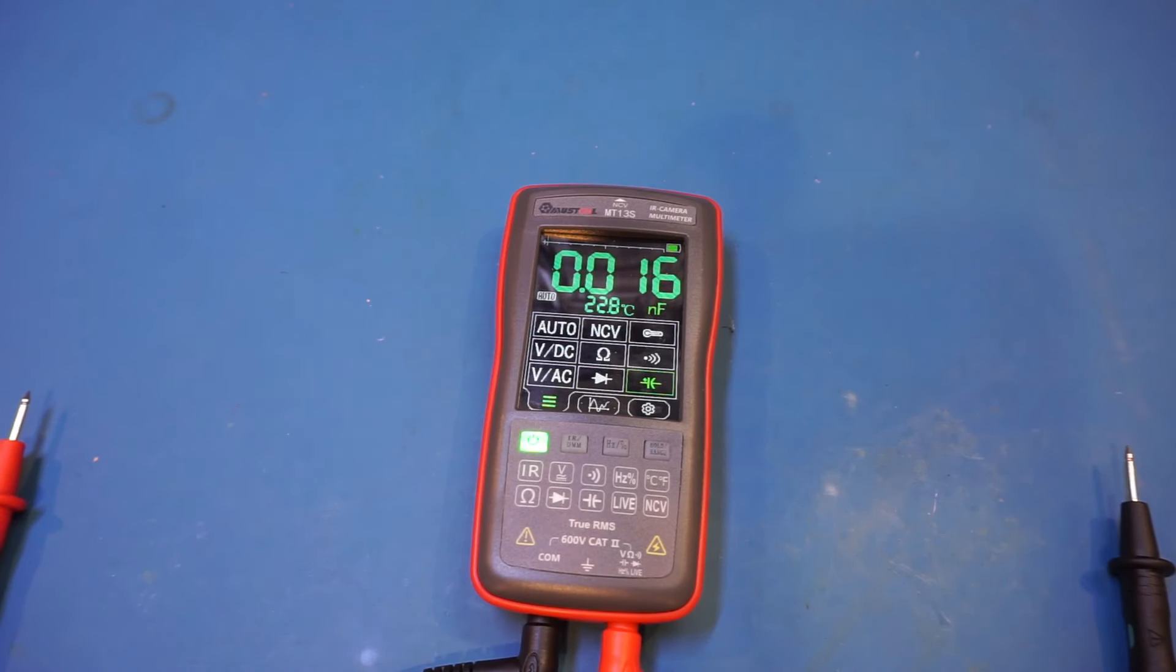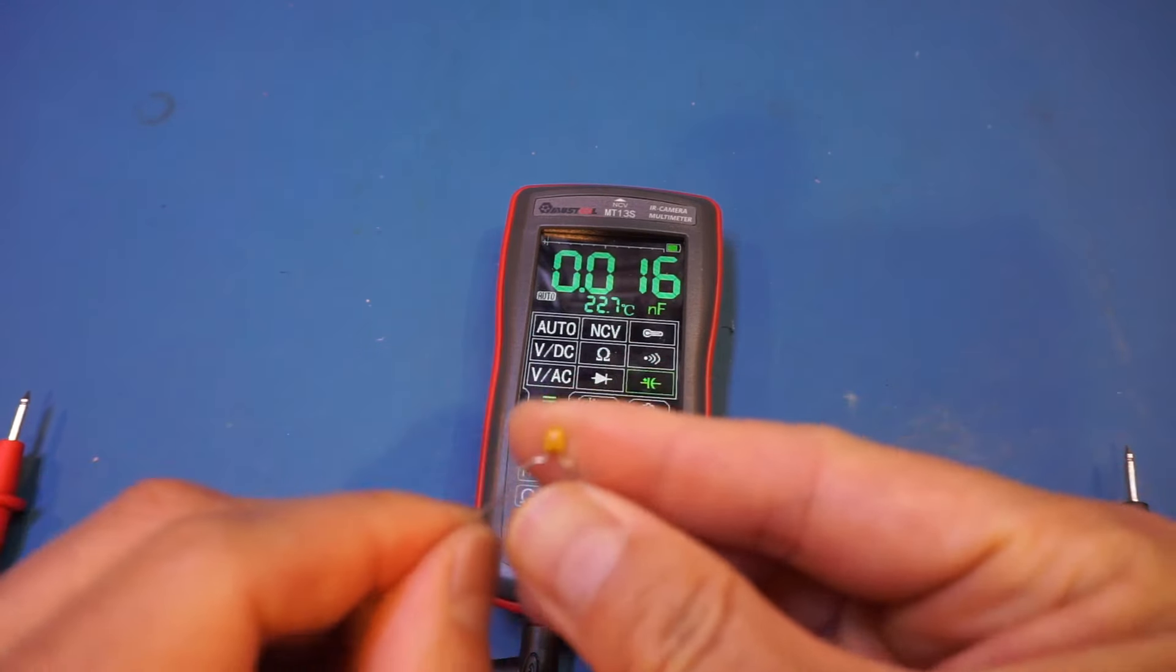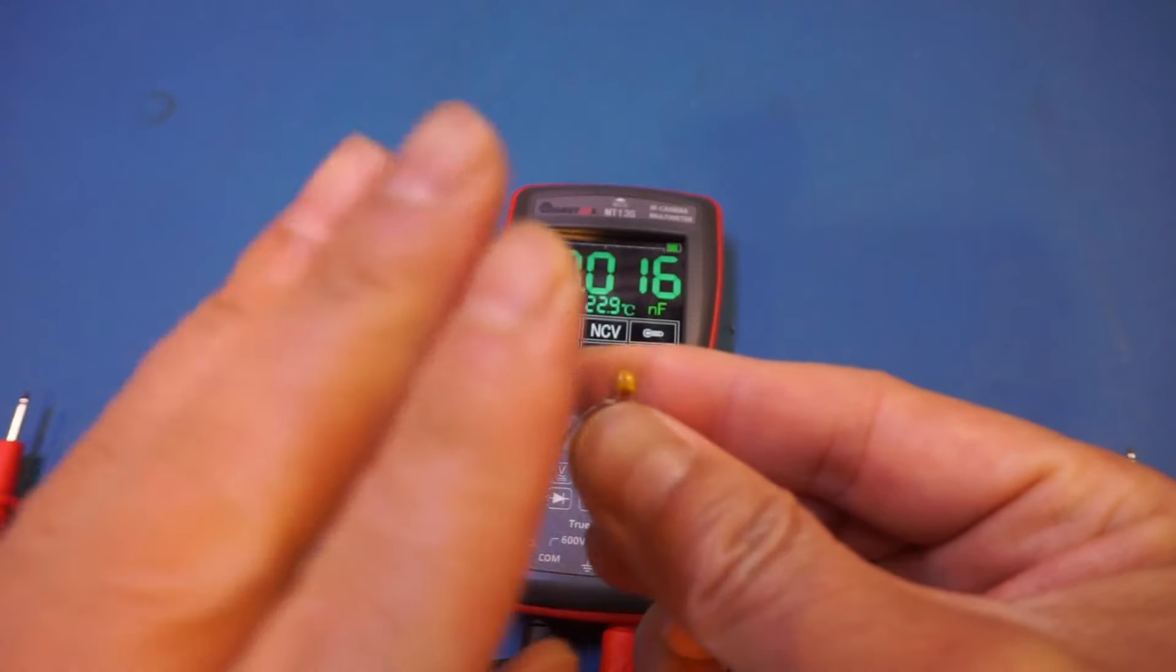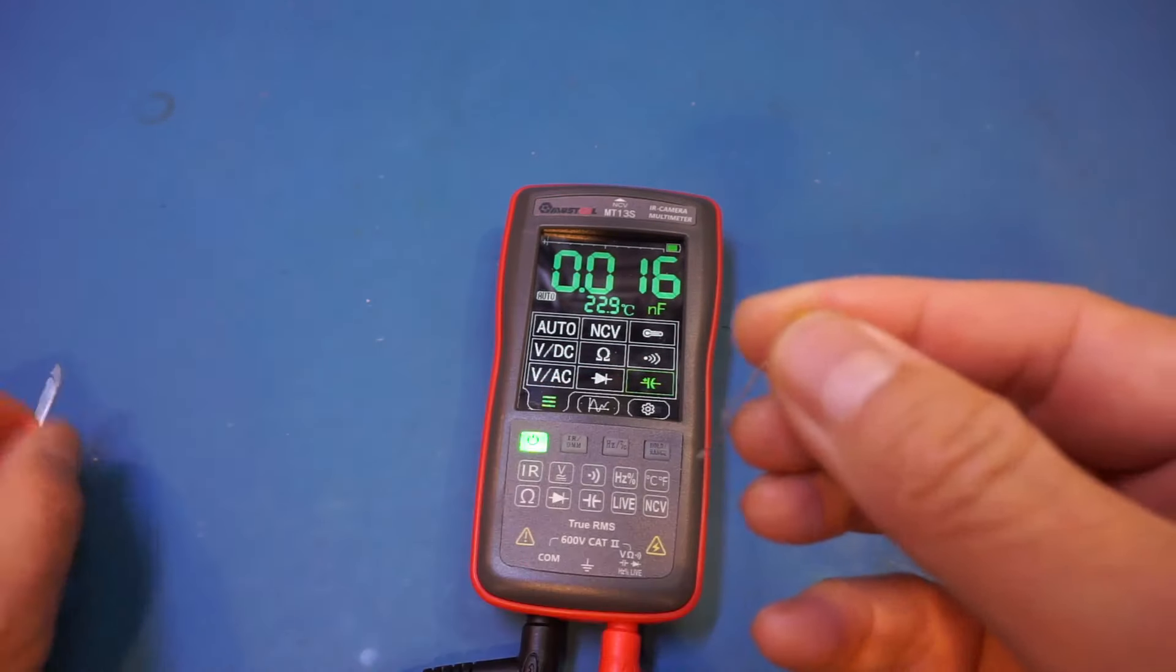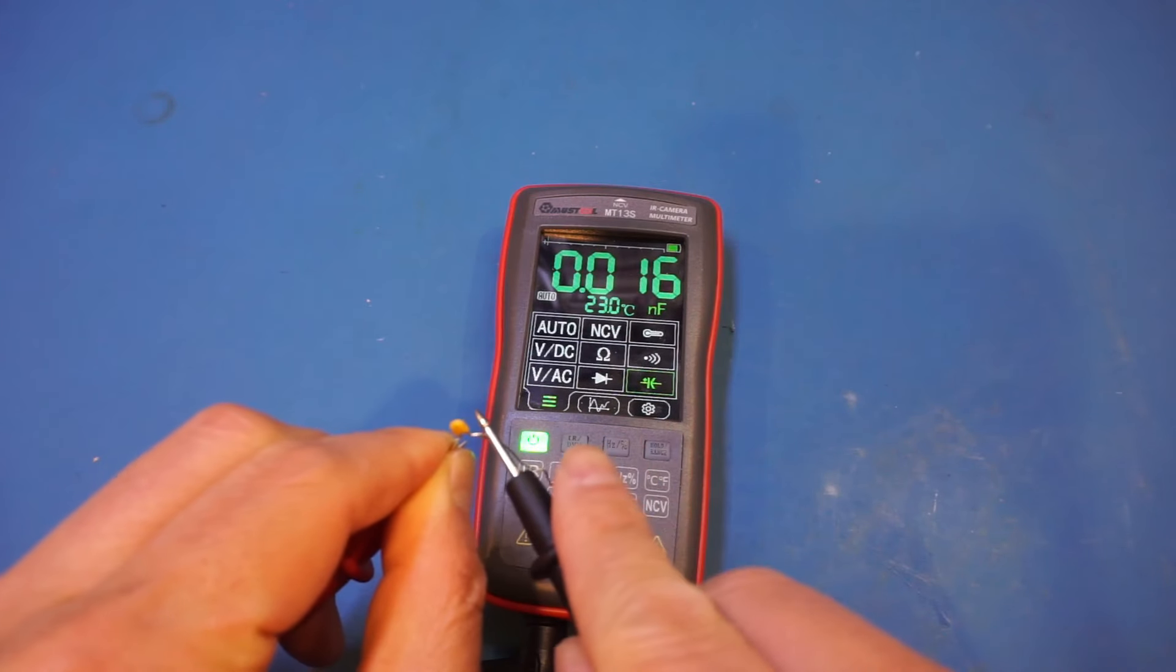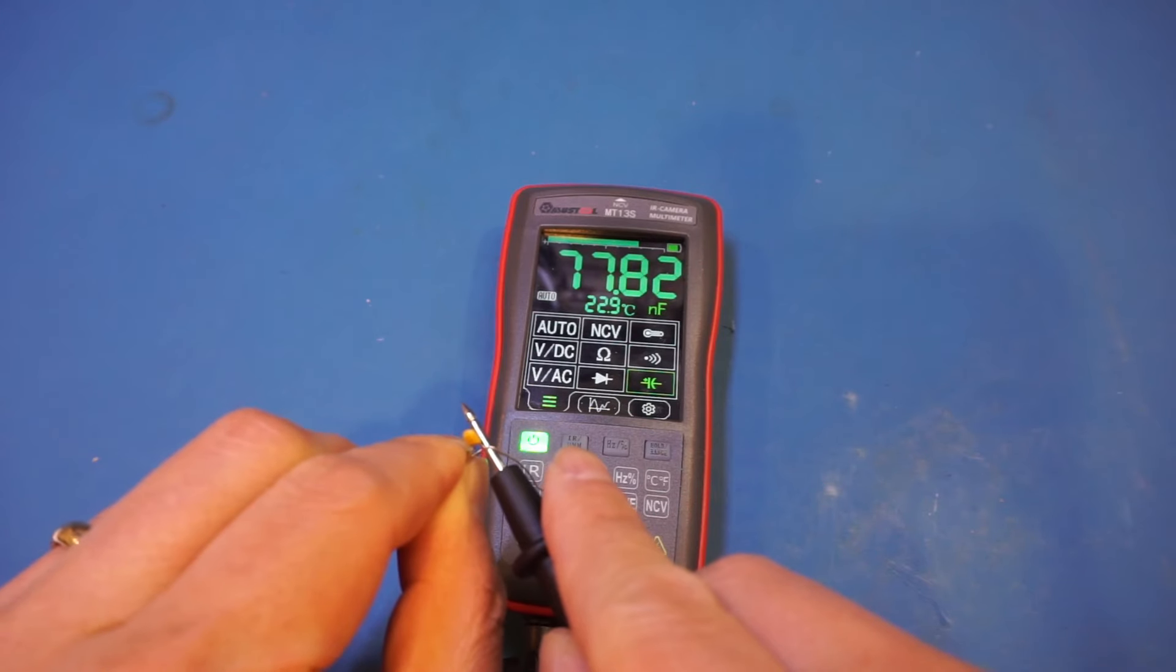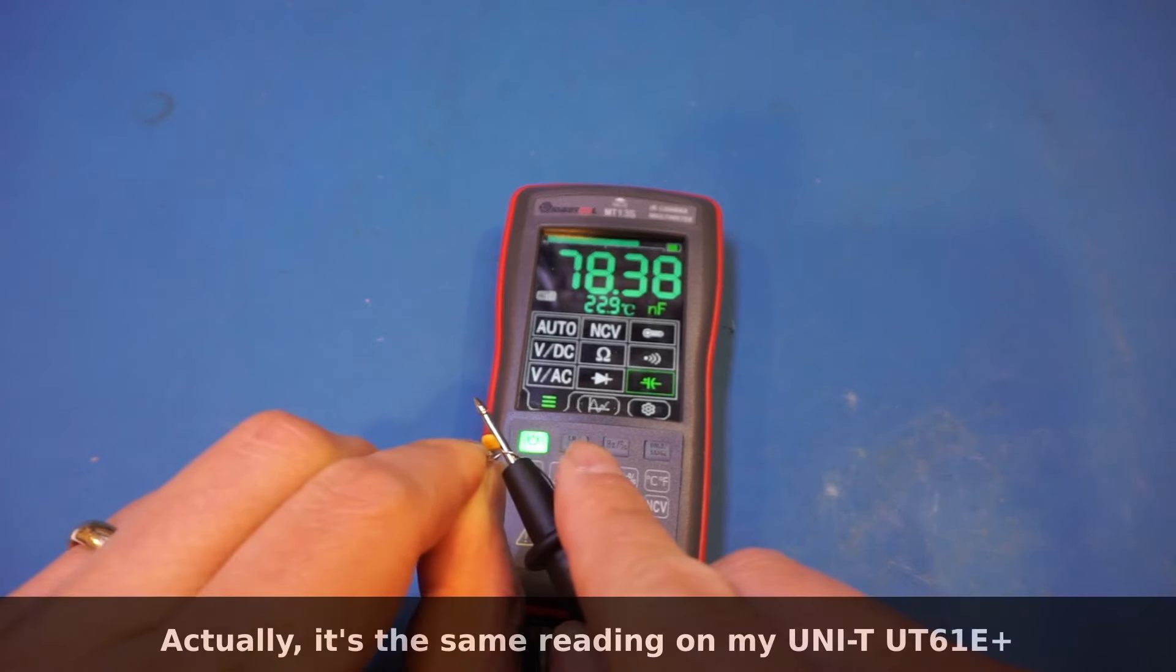Let's start with a 100 nF capacitor. And this one, if you recall, the measurement reading is consistently low and roughly at 85 nF. So let's give it a go. So I think the reading actually is on the lower side.